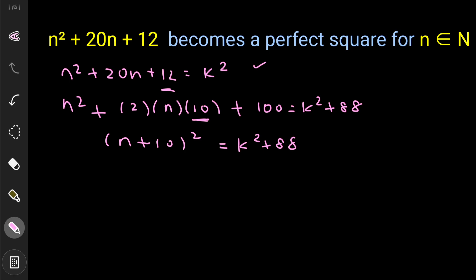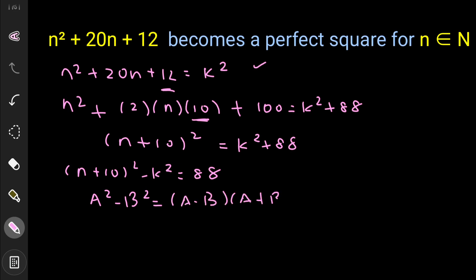Now we isolate 88 on the right by subtracting k² from both sides: (n + 10)² − k² = 88. Using the algebraic identity a² − b² = (a − b)(a + b), the left side expands to (n + 10 − k)(n + 10 + k) = 88.